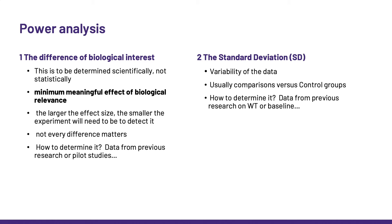First, the difference of biological interest. This is to be determined scientifically and not statistically. It is the minimum meaningful effect of biological relevance — the smallest difference that matters. The larger the effect, the smaller the experiment will need to be to detect it. It means that we have to have an idea of the difference we are after before we run the experiment. It may seem counterintuitive, but it is not actually, as not every difference matters — some are too small to be reported or explored further, so we need to determine the smallest meaningful one for us, from previous research or a pilot study, for example.